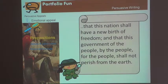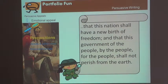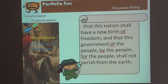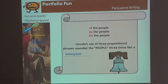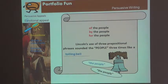We're going to start with prepositions, and we're going to take a look at another passage of the Gettysburg Address. So while I'm reading this, look for prepositions. 'That this nation shall have a new birth of freedom, and that this government of the people, by the people, for the people, shall not perish from the earth.' Of the people, by the people, for the people. Lincoln's use of three prepositional phrases sounded 'the people' three times like a tolling bell — the people, the people, the people.